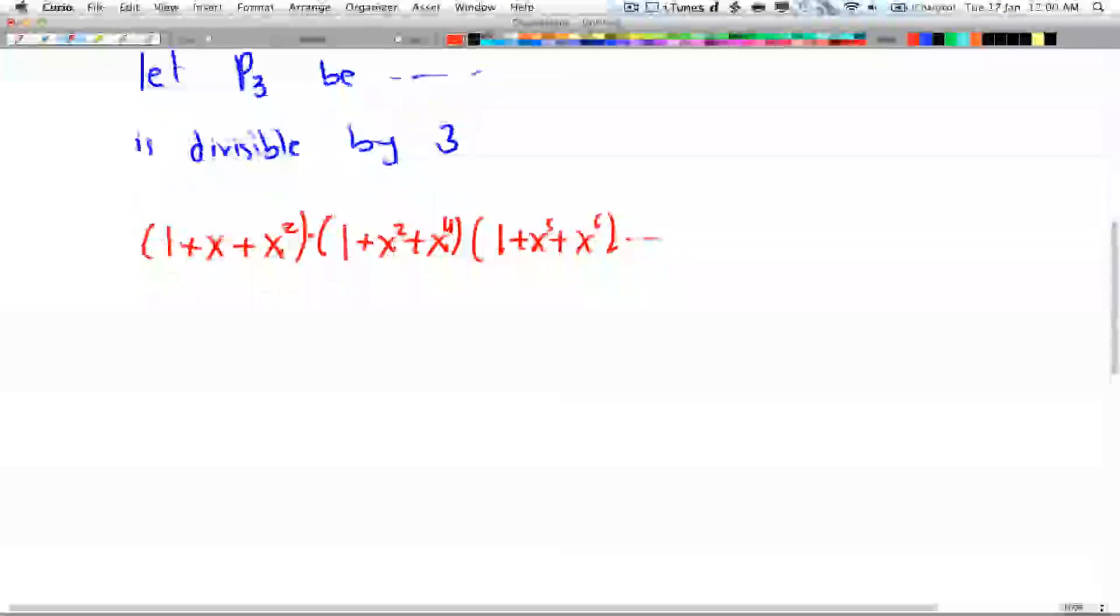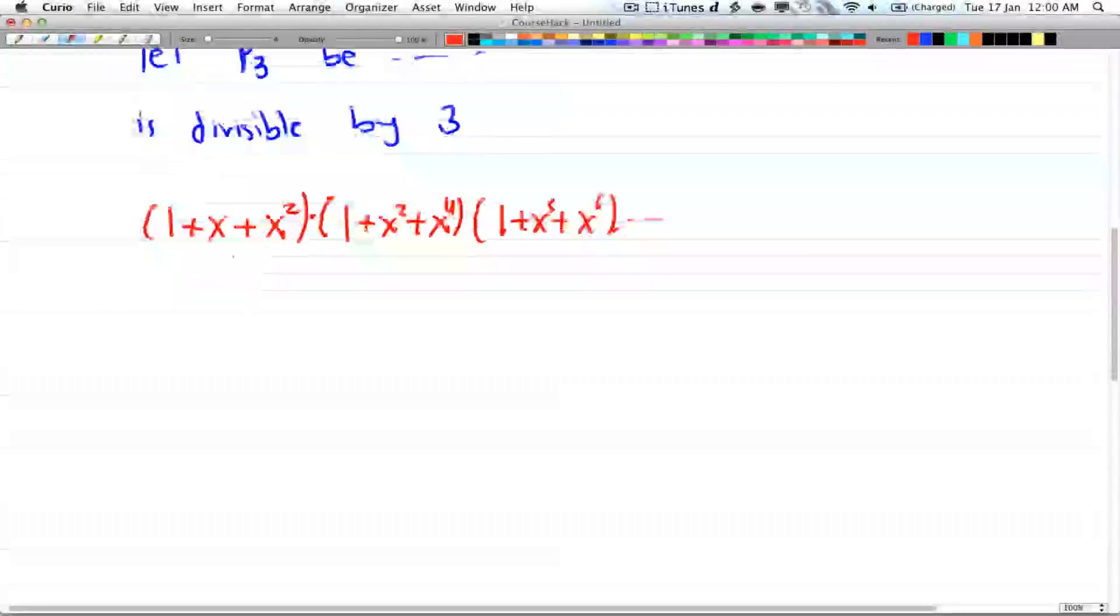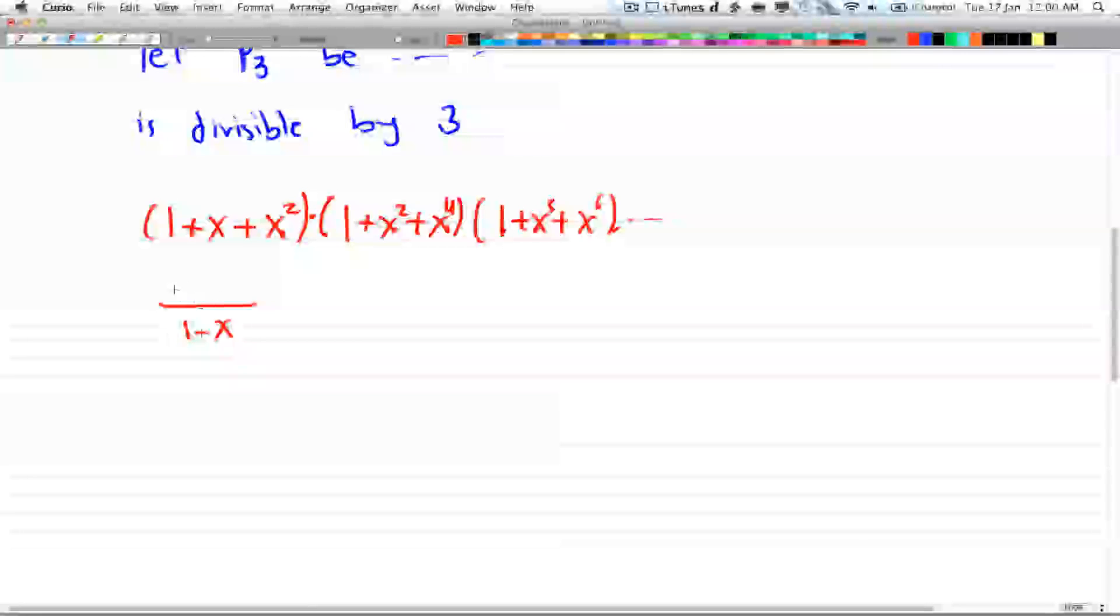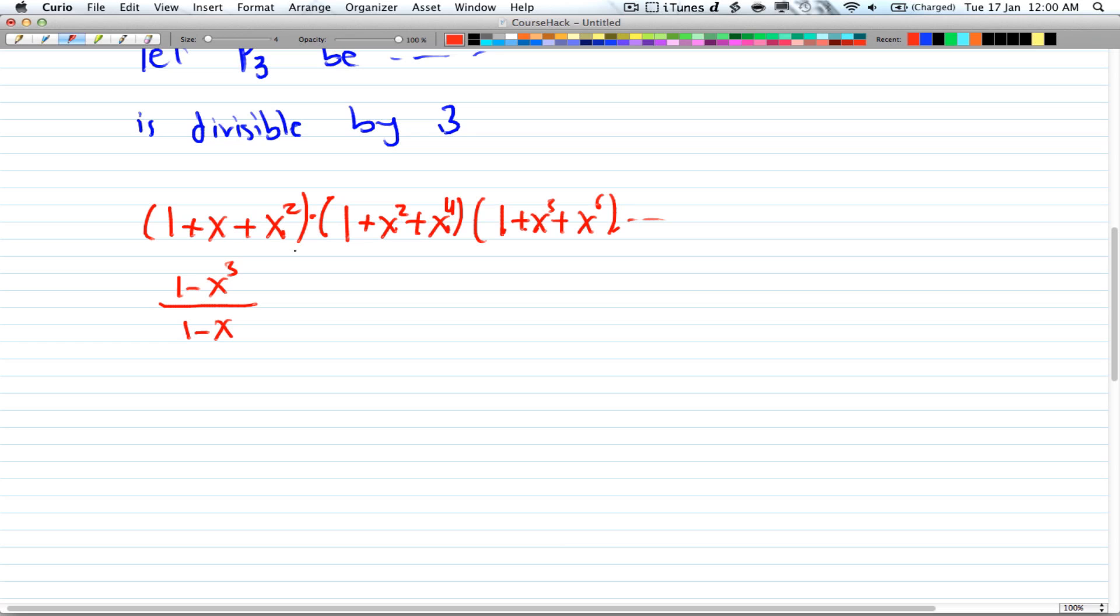So if you want to write this in generating functions, you're going to have (1 - x³)/(1 - x). And if you don't know this, I did a tutorial 2 or 3 videos back that explains how we get this. I'll leave a link on top. So that will be multiplied by (1 - x⁶)/(1 - x²) times (1 - x⁹)/(1 - x³).